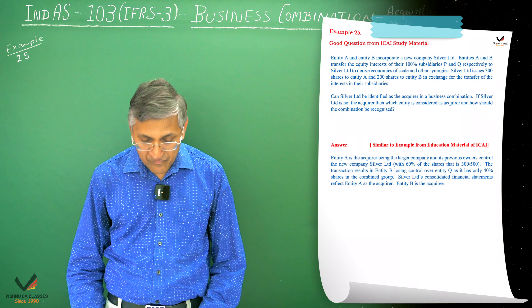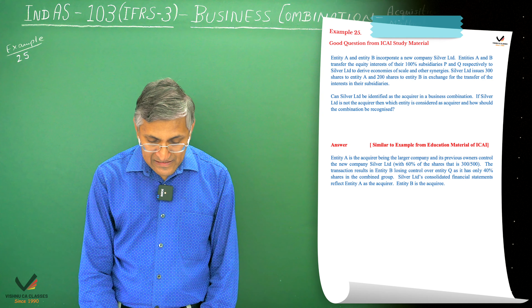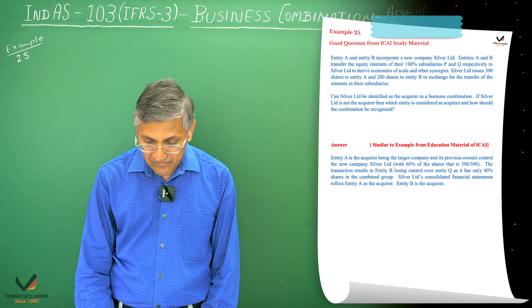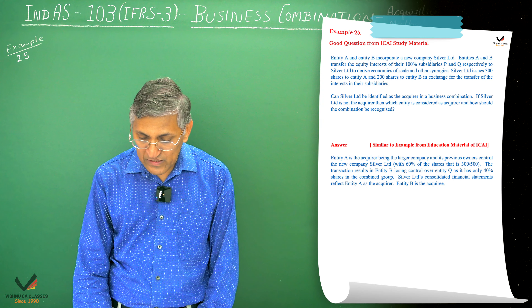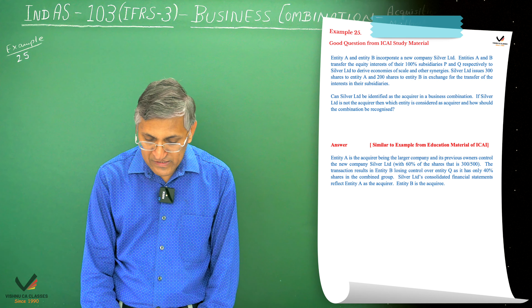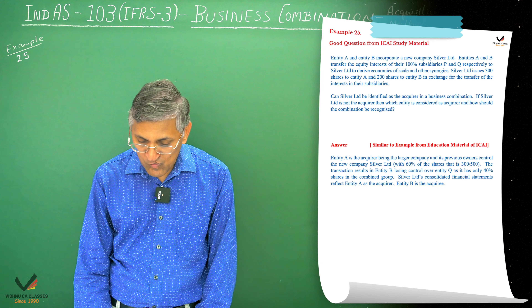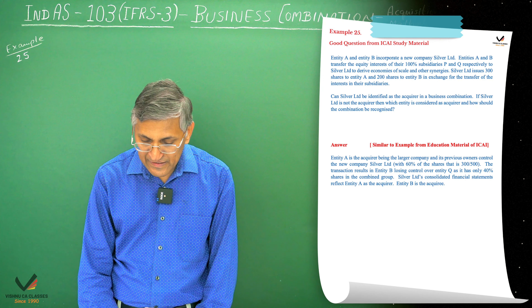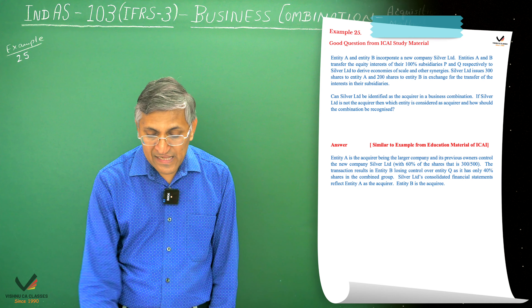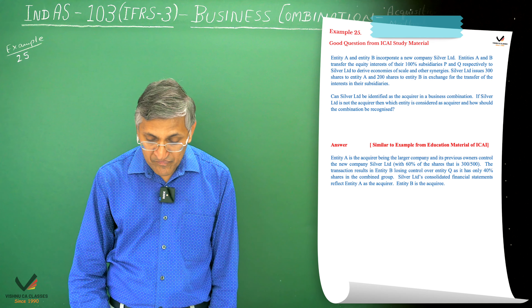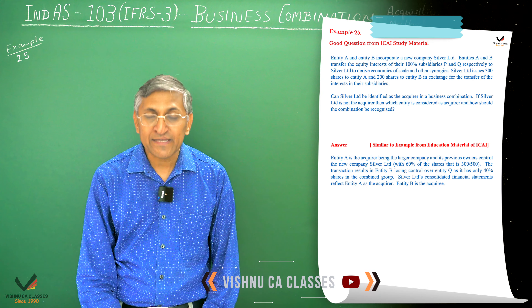Next, we have Example Number 25, also from the Study Material of ICAI. In this question, it is given that Entity A and B incorporate a new company, Silver Limited. Entities A and B transfer the equity interest of their 100% subsidiaries P and Q respectively to Silver Limited, to derive economies of scale and synergy benefits. Silver Limited issued 300 shares to Entity A and 200 shares to Entity B in exchange for transfer of interest in their subsidiaries. We have to determine: can Silver Limited be identified as an acquirer in a business combination, and if not, which entity is the acquirer?